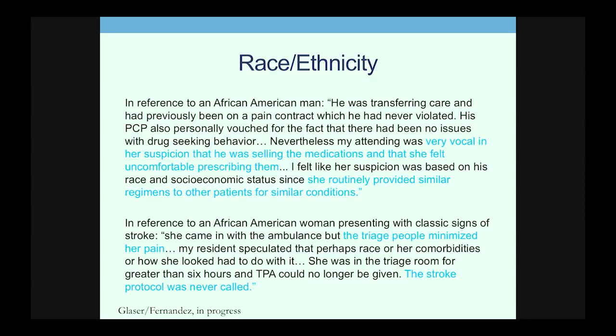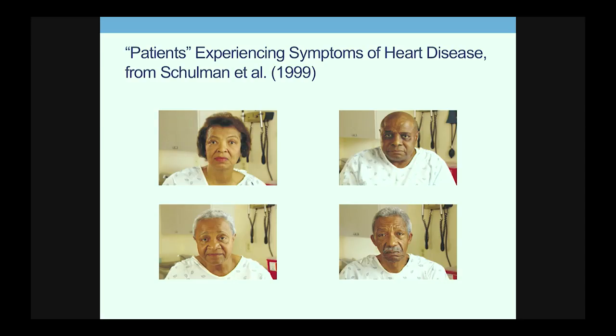In reference to an African-American woman presenting with classic signs of stroke: she came in with an ambulance but the triage people minimized her pain. The resident speculated that perhaps race, her comorbidities, or how she looked had to do with it. She was in the triage room for greater than six hours, and TPA — the medicine for stroke — could no longer be given. The stroke protocol was never called. We're proud of being an institution that can examine its own health care disparities, though clearly there is a lot that needs to be improved.